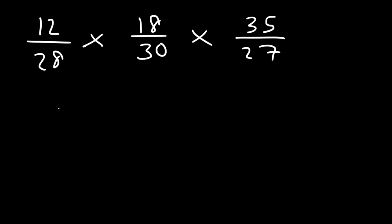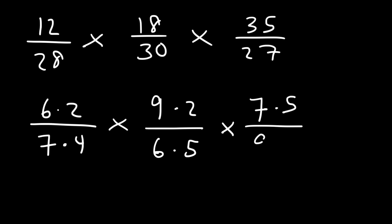12 we can write that as 6 times 2. 28 we could say it's 7 times 4. 18 we can write that as 6 times 3. Better yet I'm going to make that 9 times 2. Because there's 27 and 27 is 9 times 3. So we can cancel a 9. We can cancel a 7. We can cancel a 5. We can cancel a 6.